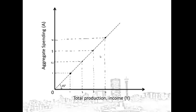Connecting the dots creates a 45-degree line. This line can be seen as a guide — it just indicates where all the possible equilibrium points are. In the Keynesian model, you can only be in equilibrium if aggregate spending is equal to total production, meaning if you are on this dotted line. This is not a real line; it just helps us to identify equilibrium.